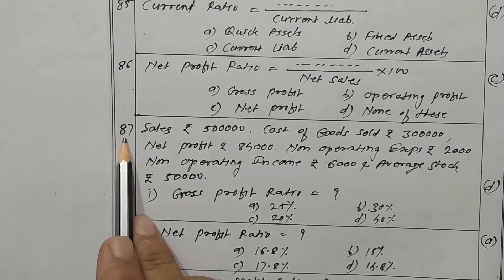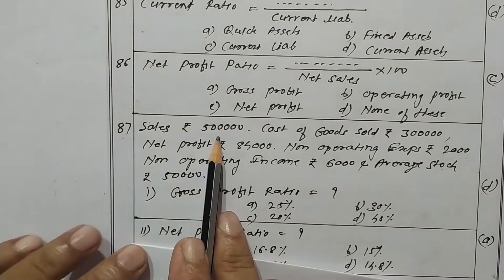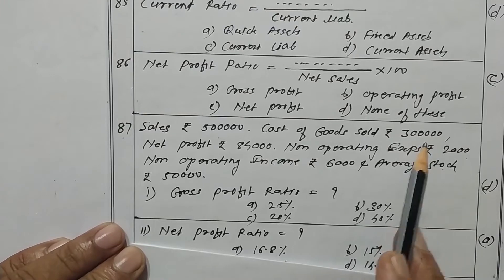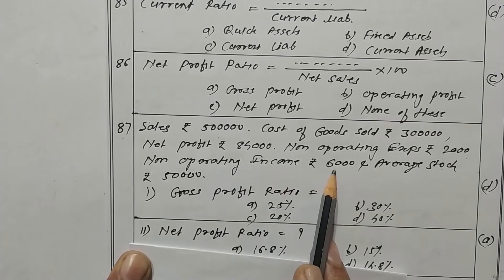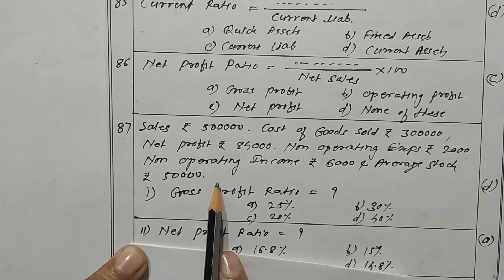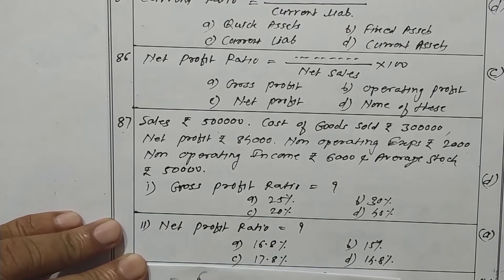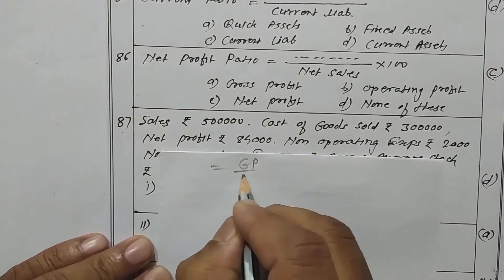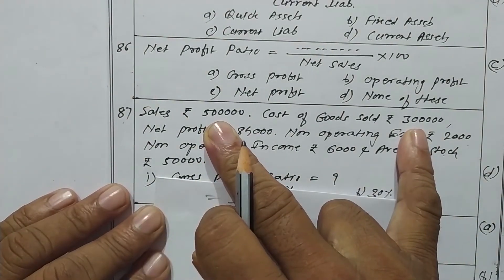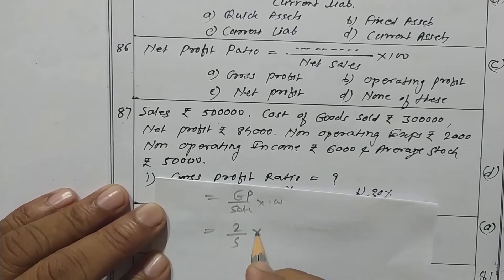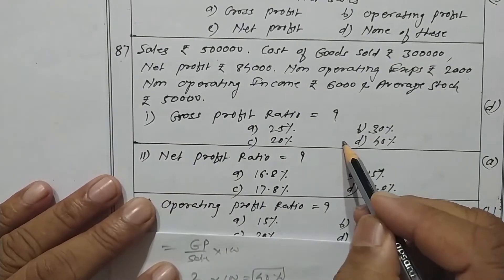Practical question 87. Sales is 5 lakhs, cost of goods sold is 3 lakhs, net profit is 84,000, operating expenses is 2,000, non-operating income is 6,000, and average stock is 50,000. GP ratio formula is GP upon sales into 100. GP is 5 lakhs minus 3 lakhs equals 2 lakhs, divided by 5 lakhs into 100, giving 40 percent. Option D is the correct one.